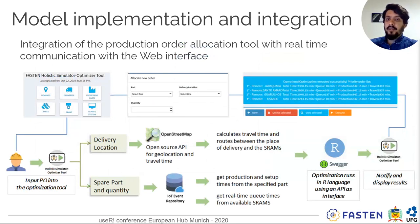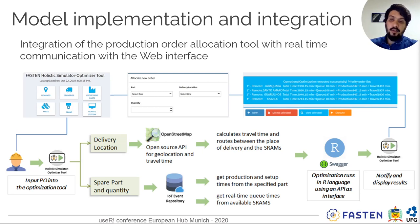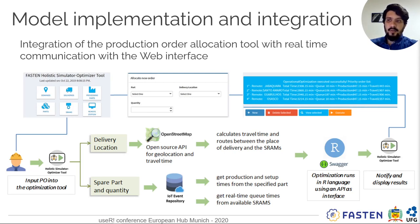Regarding implementation and integration, this model has a web graphical interface so the user can submit a production order into the optimization tool. Using the information from the production order, we consult the external application to calculate transportation time between the defined delivery place and all production centers, retrieve historical and real-time data from the IoT platform, and then run our model — a SWAG API — which gives back the information to the system, notifies the users, and controls the production order location.